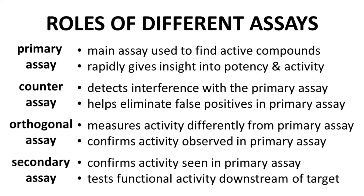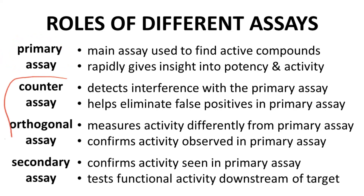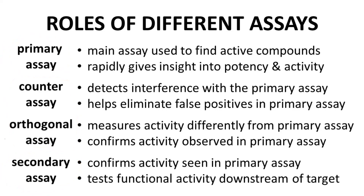A secondary assay is more likely to be a cellular assay. Ultimately, the secondary assay confirms activity observed in the primary assay. When researchers test molecules for biological activity, multiple different types of assays are used to ensure that the observed activity in the primary assay is valid and leads to meaningful changes in the biological pathway of interest.